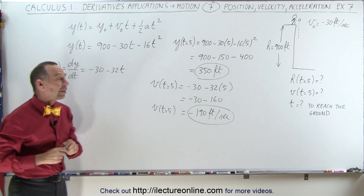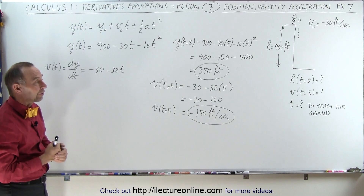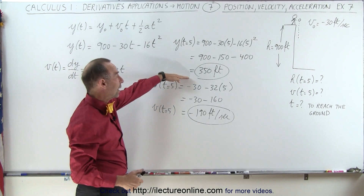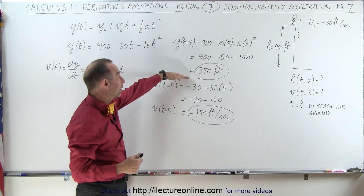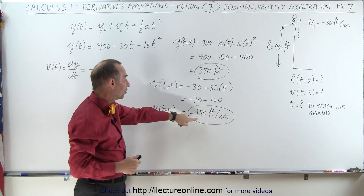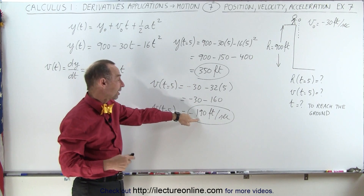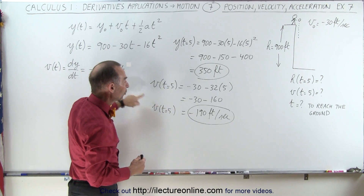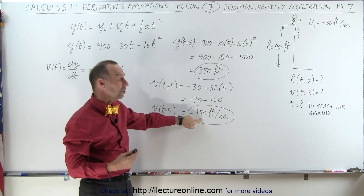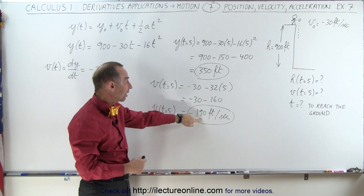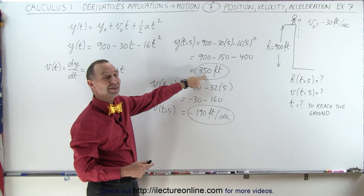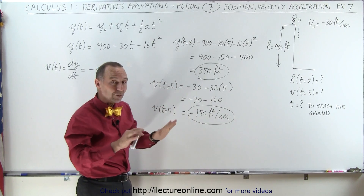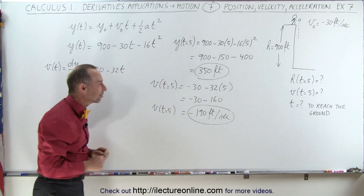Now we need to figure out how long it will take to reach the ground. After 5 seconds the object is at 350 feet above the ground, going down at 190 feet per second and still accelerating at 32 feet per second squared. In 2 seconds it will cover more than 380 feet, so it will reach the ground in less than 2 seconds later — somewhere between 6 and 7 seconds.